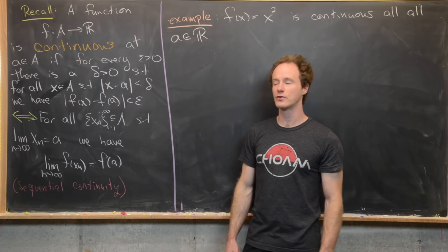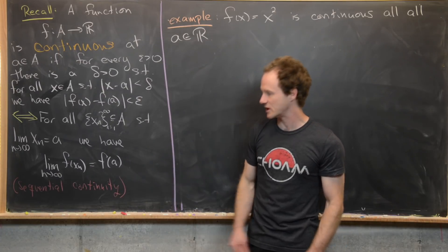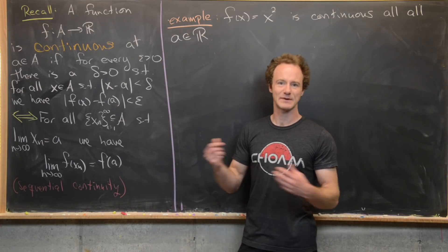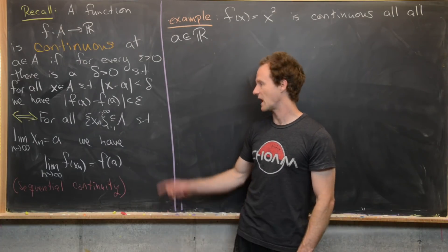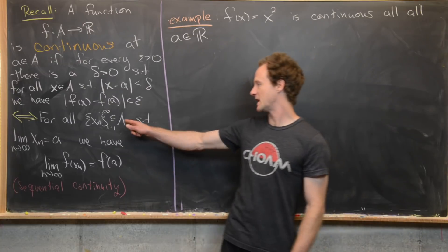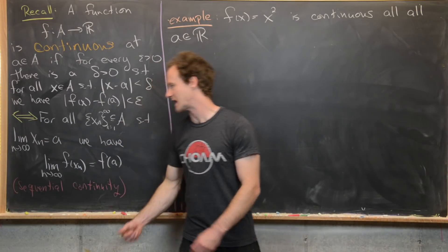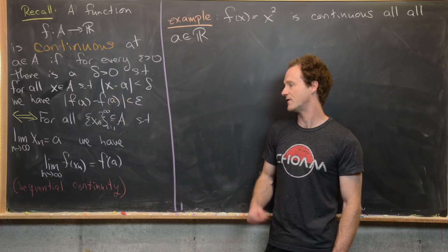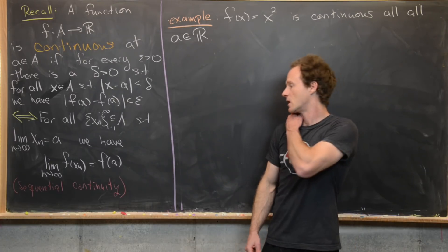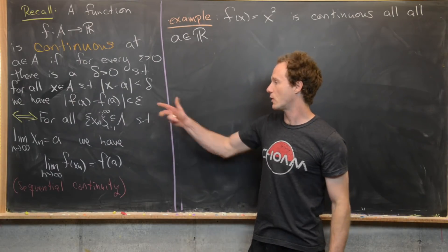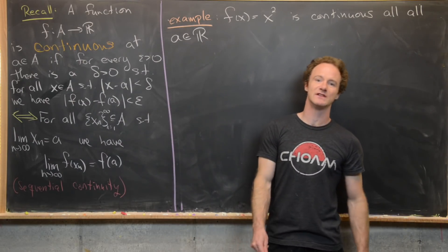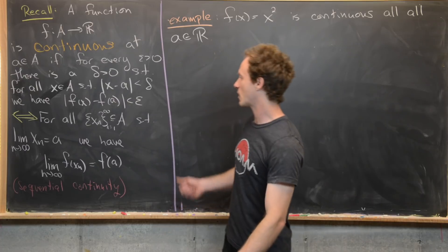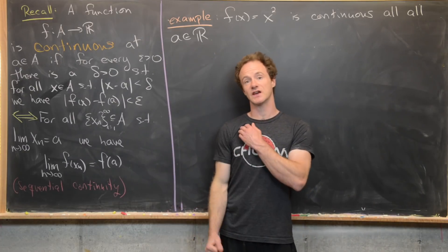In a previous video we proved that this is equivalent to sequential continuity, which is something that happens in the real numbers — and in many spaces but not all. That says: for all sequences x_n inside A satisfying the limit as n → ∞ of x_n equals a, we have the limit as n → ∞ of f(x_n) equals f(a). This puts everything in terms of limits of sequences, whereas the other is the standard epsilon-delta definition, and we'll use each in today's video.